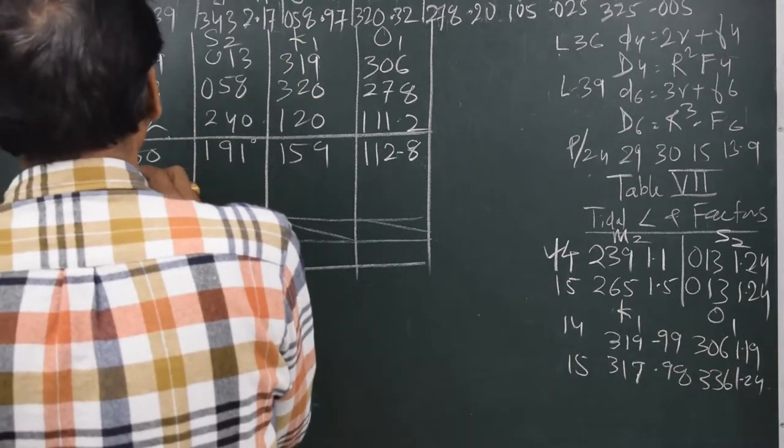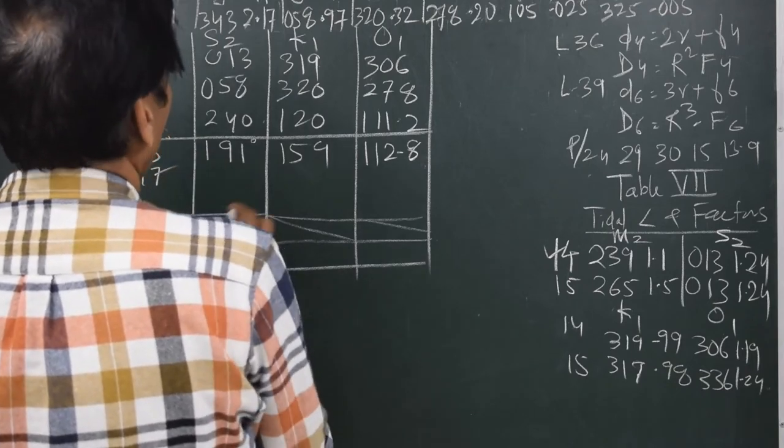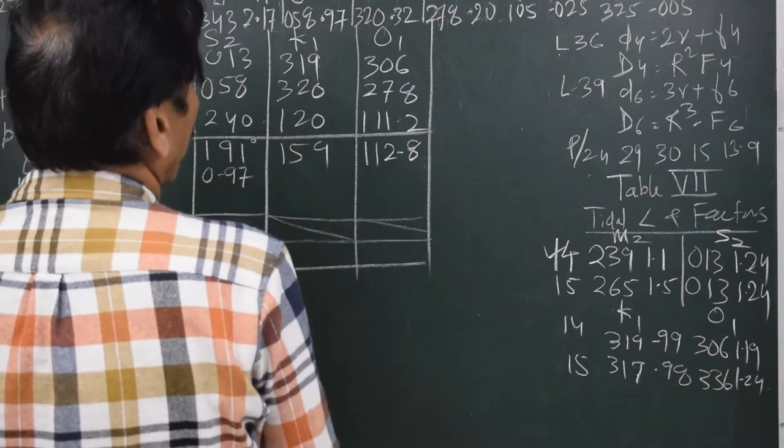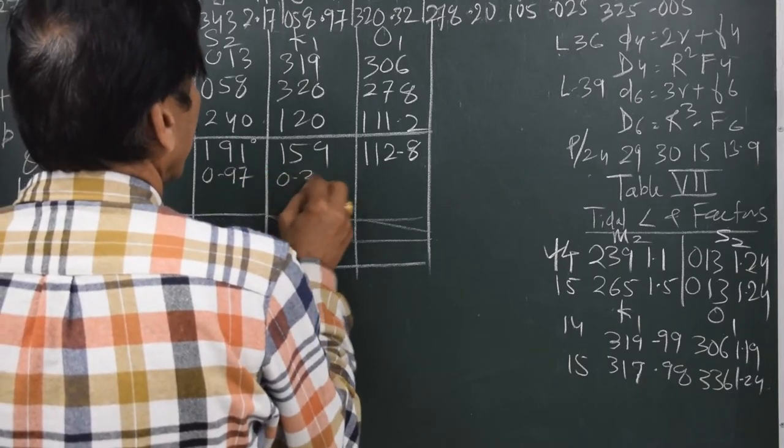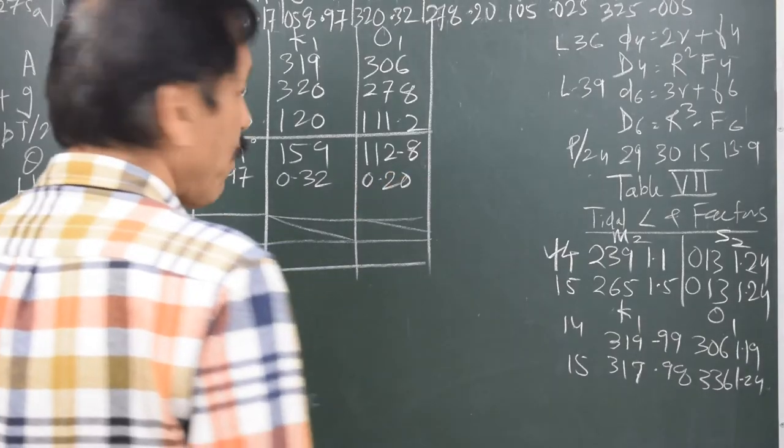So it is 2.17 for M2. For S2 it is 0.97. For K1 it is 0.32 and O1 it is 0.20. F_t is the factor.